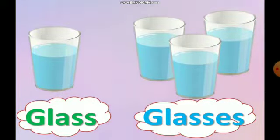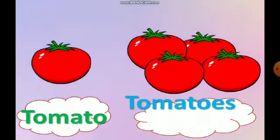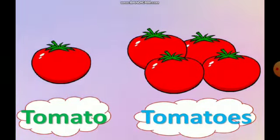One glass, many glasses. To make it many, we are adding ES. One tomato, many tomatoes. Remember, in the last class we added only the letter S to make it many, but in today's lesson we are going to add ES to make it many.